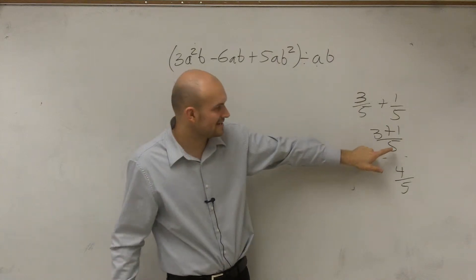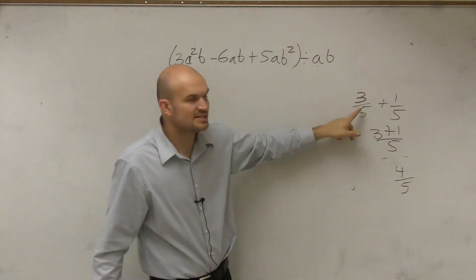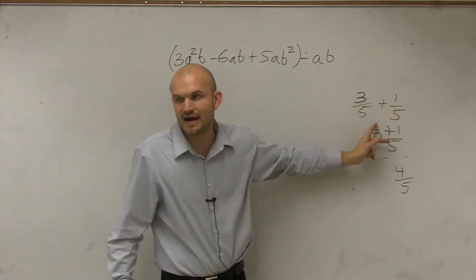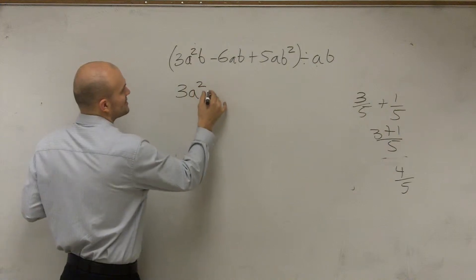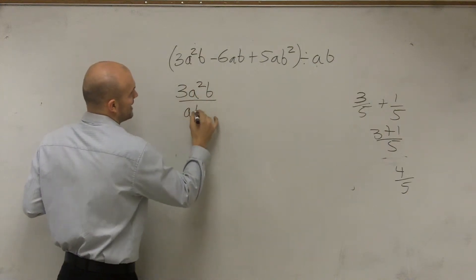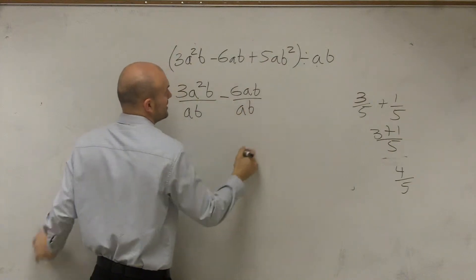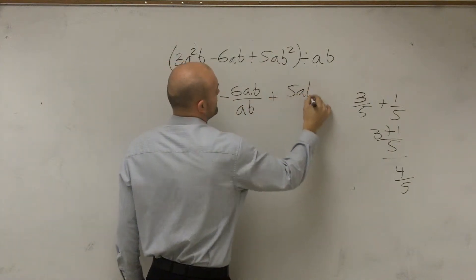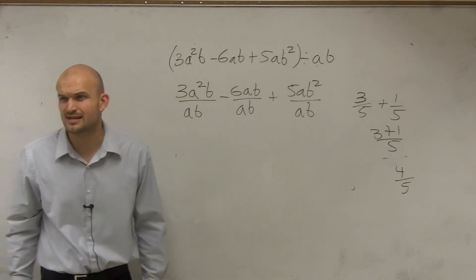So the way that I'm going to write this is, rather than saying it as all three of these terms divided by 5, I'm just going to break up each term and divide it by what it's being divided by. So therefore, I can rewrite this as 3a squared b divided by AB minus 6ab divided by AB plus 5ab squared divided by AB. Does that kind of make sense on how I rewrote that?